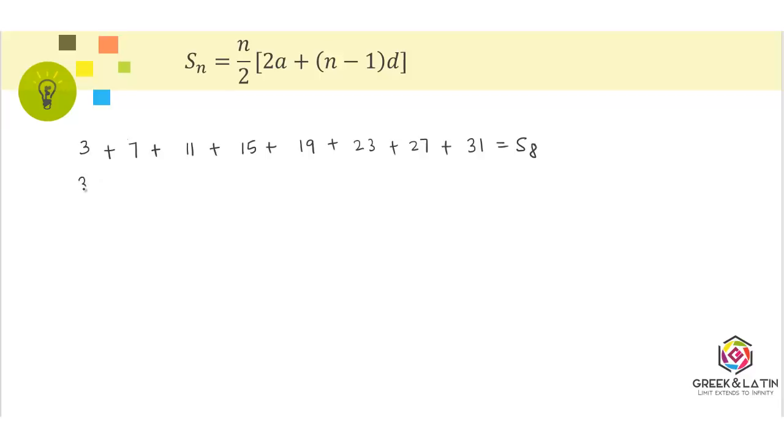Start with 31, then 27, 23, 19, 15, 11, 7, and 3. This is the same summation because the numbers are the same. The result is still S8. Now add them as usual.